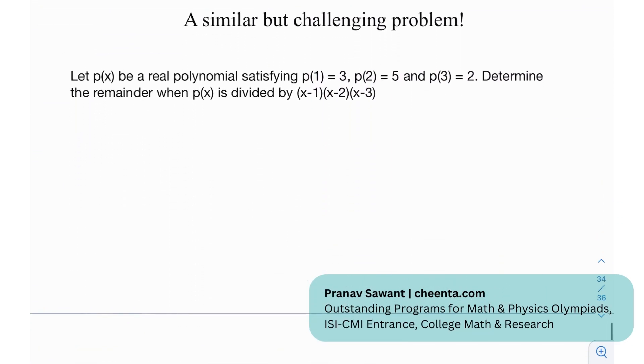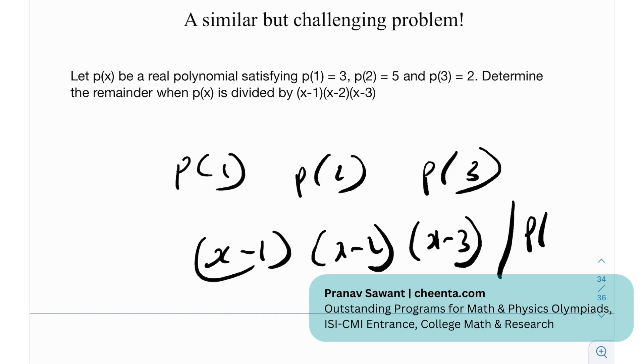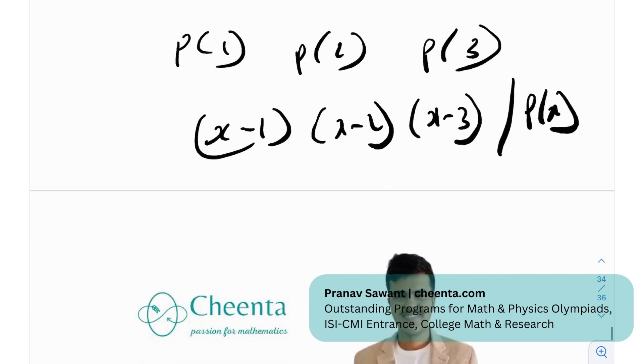So after that we have a similar but challenging problem and it's asking us that let p(x) be a real polynomial satisfying three given conditions p of 1 p of 2 and p of 3 and we need to determine the remainder when p of x is divided by (x minus 1) times (x minus 2) times (x minus 3) but the really obvious hint over here is that they've given us p(1) p(2) p(3) and they've asked the remainder when (x minus 1) (x minus 2) and (x minus 3) divides p of x what's the remainder I think you might have seen such problems before especially if you're preparing for like IOQM this is one of the rather standard problems and the outcome is coming up as well so if you're able to make any progress on it or if you're able to solve it let me in the comment section below and I'll help you out until then I'll see in the next video thank you very much.